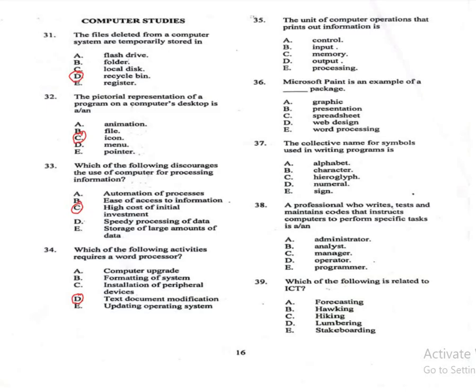Question 35: The unit of computer operations that prints out information is — A: control, B: input, C: memory, D: output, E: processing. The correct answer is D, output. Printers and monitors are output devices that present processed data.